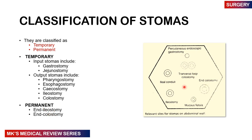Here are the different relevant sites on the abdomen. If you see a stoma in this region, it's most likely a percutaneous endoscopic gastrostomy. In this region, it may be a transverse loop colostomy. On this side, it could be an ileostomy, a mucus fistula, or an end colostomy.